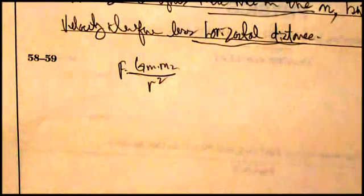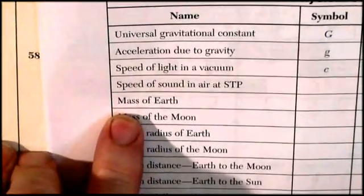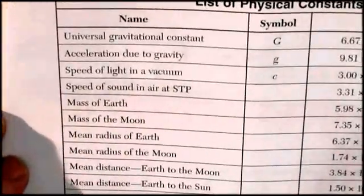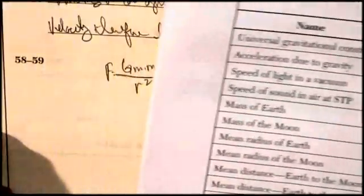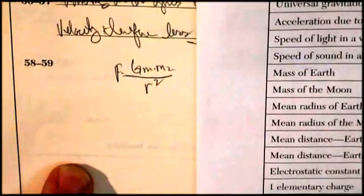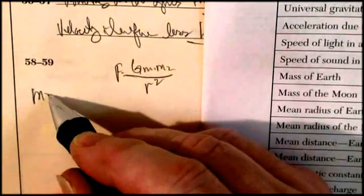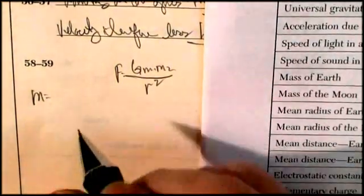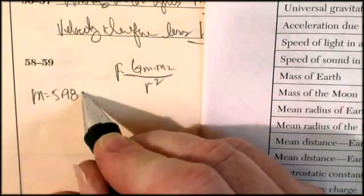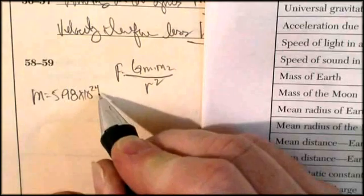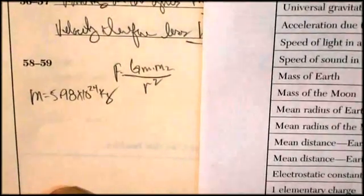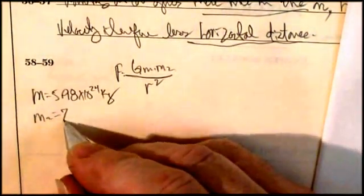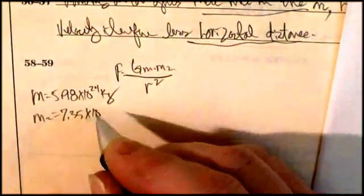On my formula sheet I've got all sorts of data. I happen to have the mass of the Earth — somebody was asking how you'd find the mass of the Earth, which is kind of an interesting story you might want to look up. The mass of the Earth, M1, is 5.98 times 10 to the 24 kilograms. The mass of the Moon, M2, is 7.35 times 10 to the 22 kilograms.